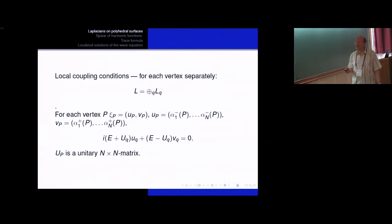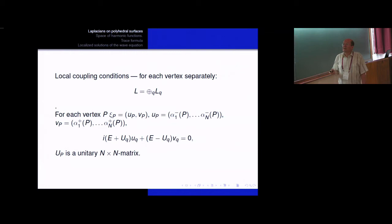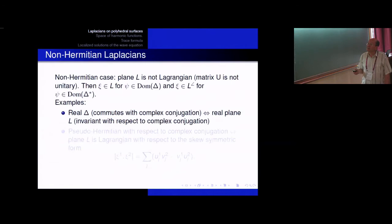This is the definition of the Hermitian Laplacian. We can modify this definition to obtain a non-Hermitian Laplacian by simply dropping the condition that the plane be Lagrangian — it can be non-Lagrangian — or equivalently the matrix U can be non-unitary. Then we obtain a non-Hermitian Laplacian.